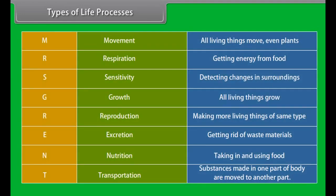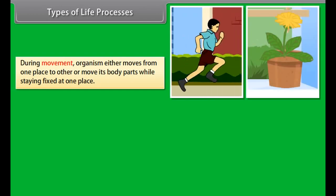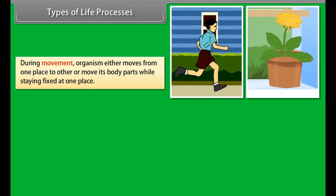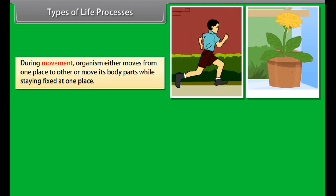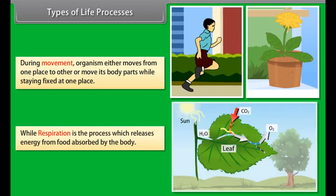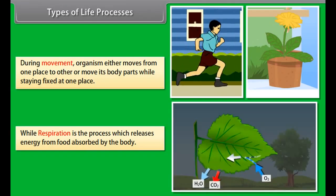Types of life processes. There are following basic life processes: respiration, sensitivity, growth, reproduction, excretion, nutrition, transportation, and movement. Organisms either move from one place to another or move body parts while staying fixed at one place. Respiration is the process which releases energy from food absorbed by the body.